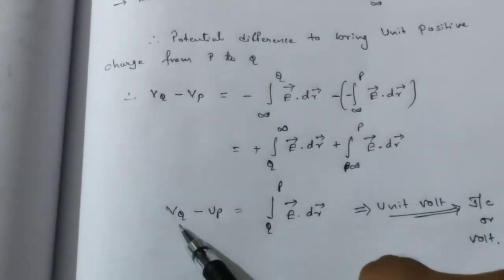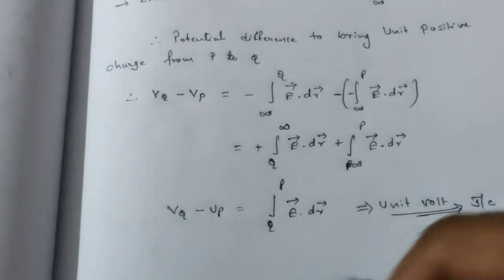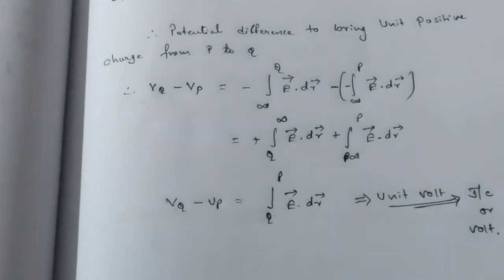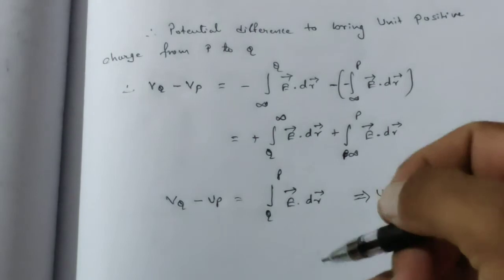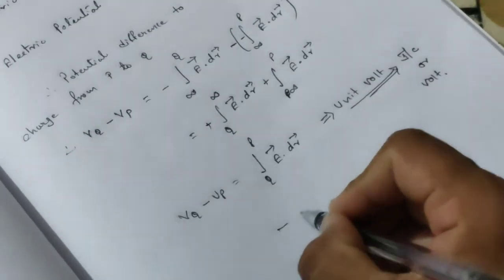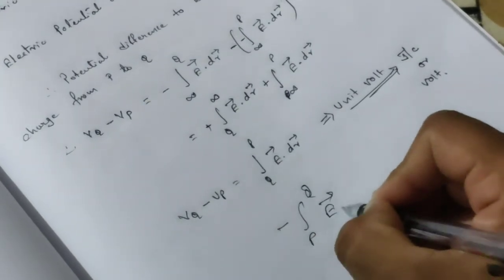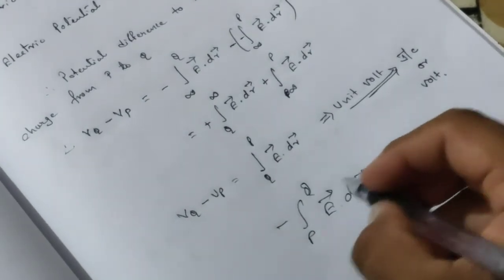That value we can write as VQ minus VP equals integral Q to P E dot dR. You can also write it as minus integral P to Q E dot dR, which is the electrostatic potential difference.